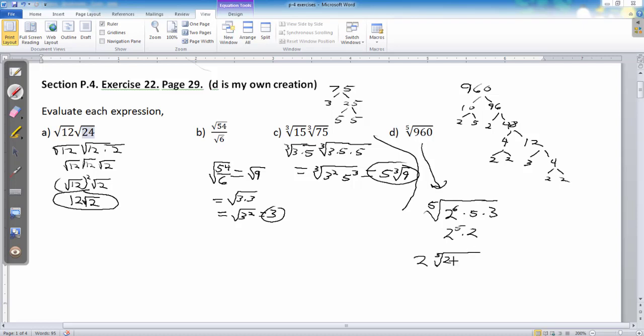2 to the 5th times 2 is the same thing as 2 to the 6th. So, that means I can actually fifth root the 2 to the 5th and bring out a 2. I still have to leave the other 2 inside. So, I have 2 times 5 times 3. And, if you can't bring anything out, you may as well multiply them back together. So, now I have the 2 fifth root of 30.